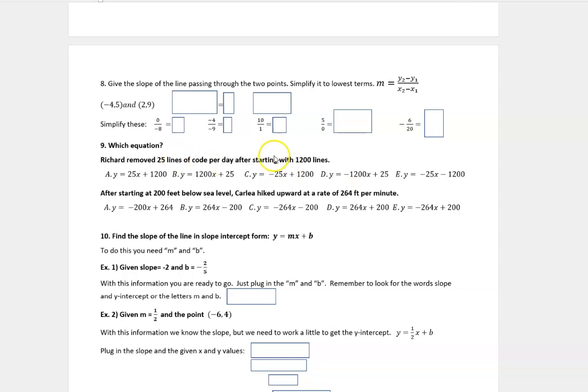So looking up here, you see the word starting right here. He's starting with 1,200 lines. That means he should have positive 1,200 at the end of that equation. So A could be true. C could be good. But the rest of these wouldn't work. Here, this looks like he's missing 1,200 lines of code. Here, it looks like he started with 25 lines of code. So we know it has to be A or C.